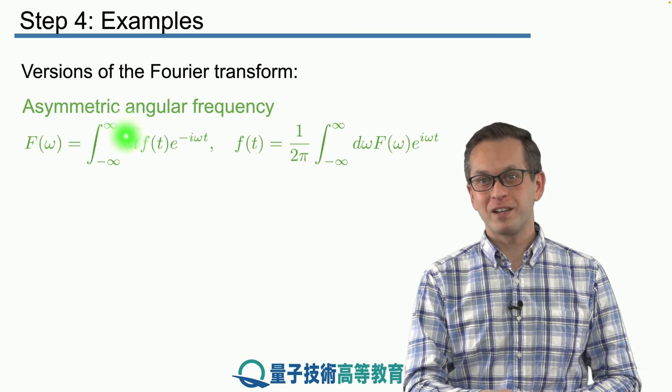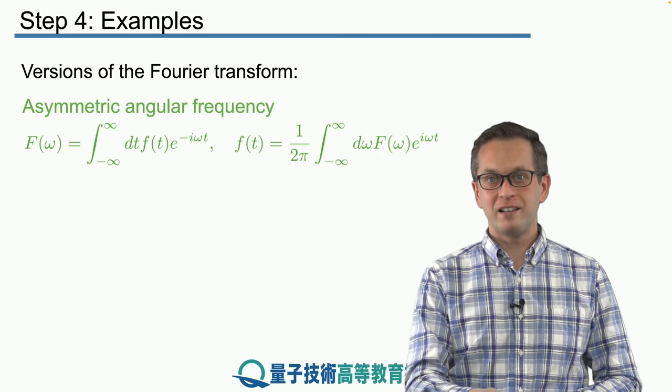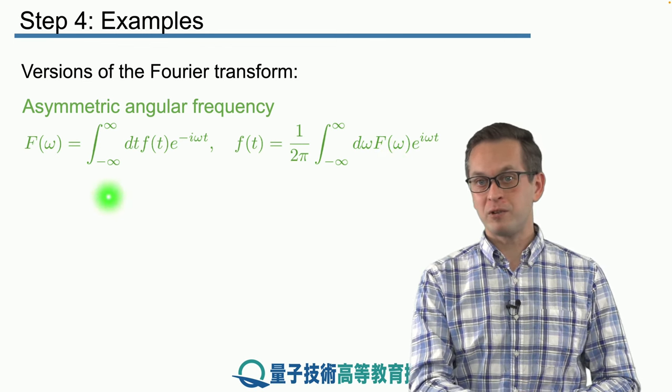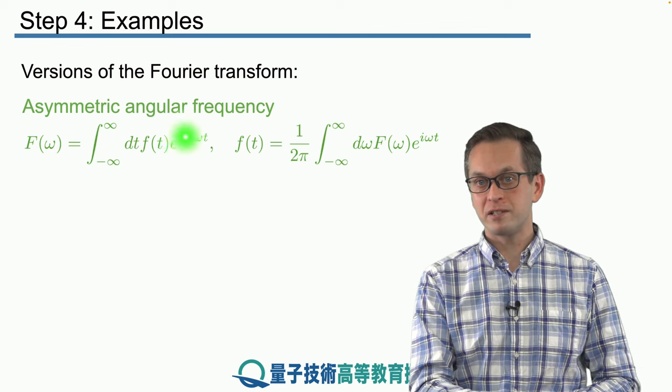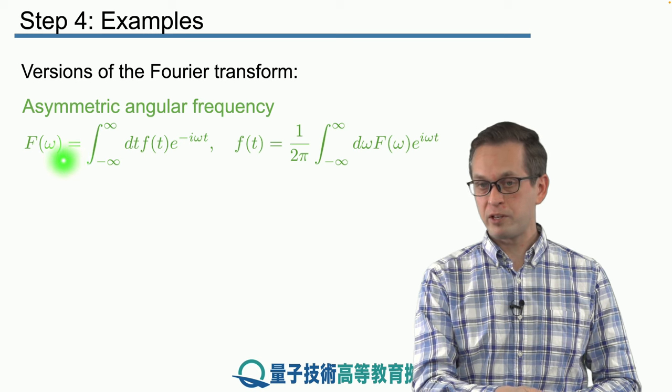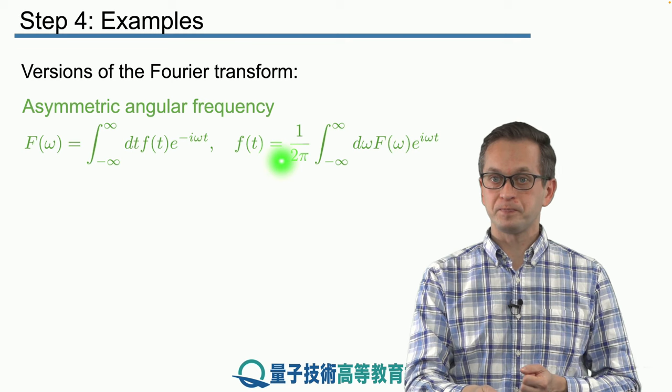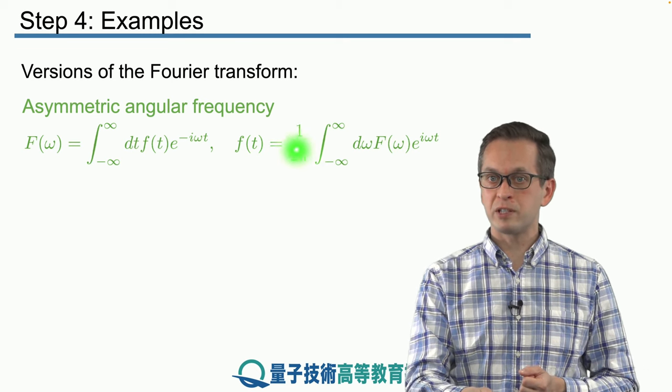So we have been using this following asymmetric angular frequency representation. And in this representation, which we can derive from starting with the Fourier series, you've got the forward Fourier transform as this. And then when you want to go back,